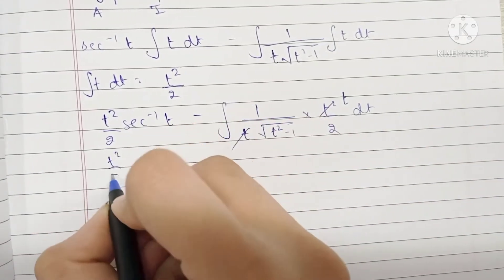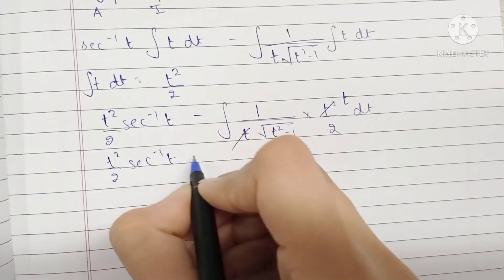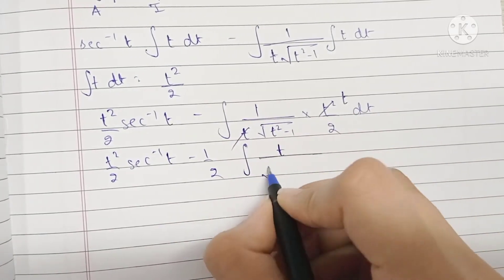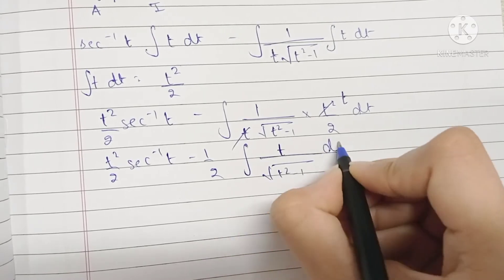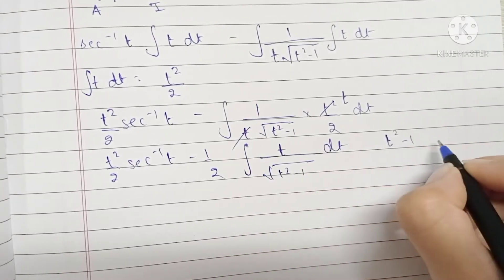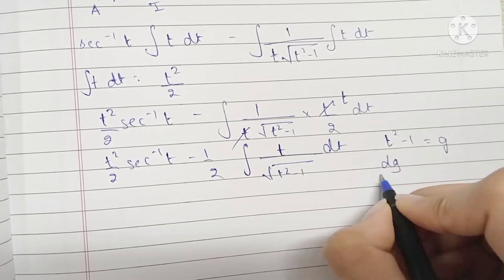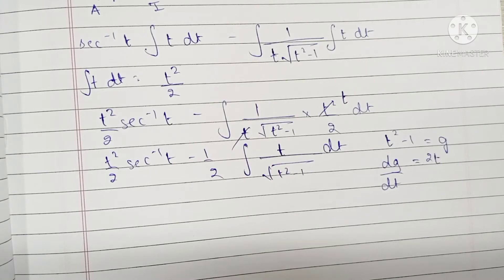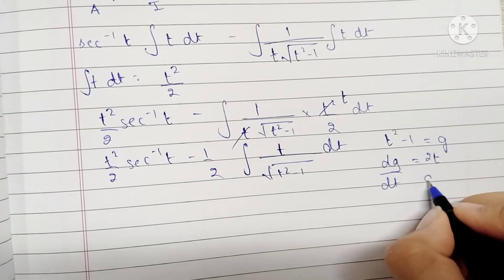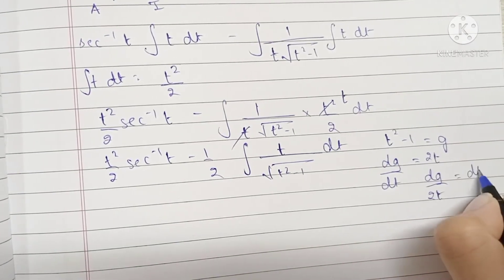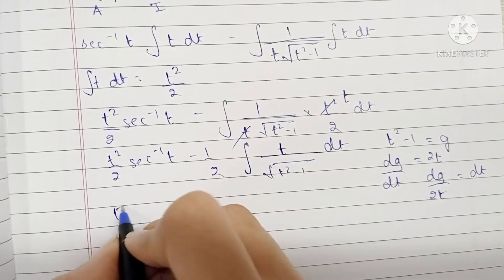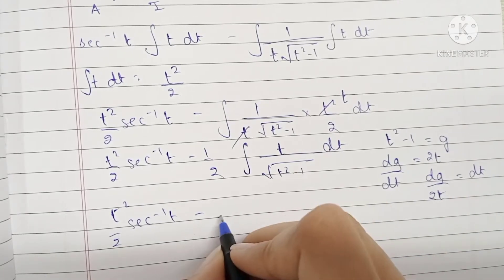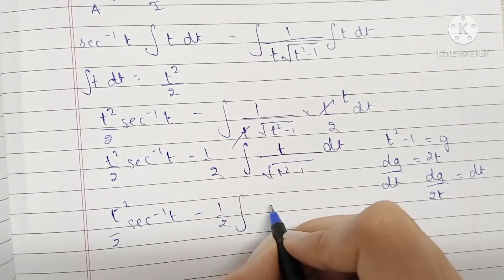After cancellation we have (1/2) times the integral of t/√(t²−1) dt. Now we substitute g = t²−1, so dg/dt = 2t, meaning dt = dg/(2t). The expression becomes t²/2 · sec⁻¹(t) minus (1/2) times the integral of t/√g · dg/(2t).